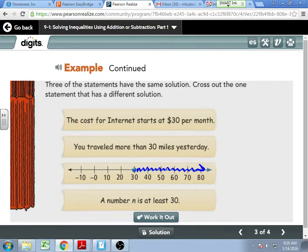Three of the statements have the same solution. Cross out the one statement that has a different solution. This is shaded to the right and your dot is filled in. So you might need to add like a squiggly so you can really see it. The third one down shades to the right. So the cost for internet starts at $30 a month. You traveled more than $30, or 30 miles yesterday. We have a graph to go about it, and a number N is at least 30. What's it mean to be at least something? Like if I say I weigh at least 167 pounds, what's that really mean?